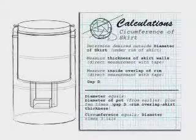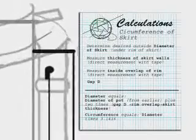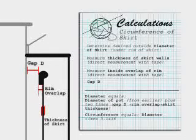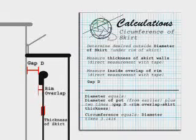Determine the desired outside diameter of the skirt under the rim of the skirt. Measure the thickness of the skirt walls and measure the inside overlap of the rim. Diameter equals the diameter of the pot plus 2 times gap D plus rim overlap plus skirt thickness. The circumference equals diameter times 3.1416.